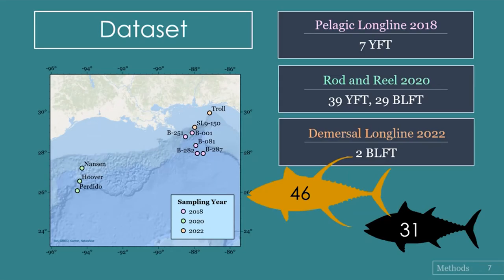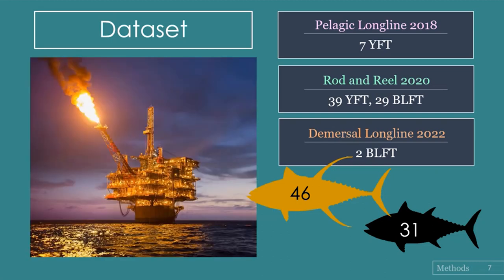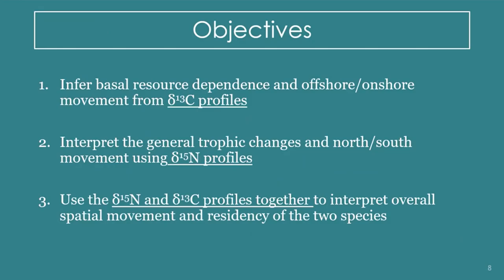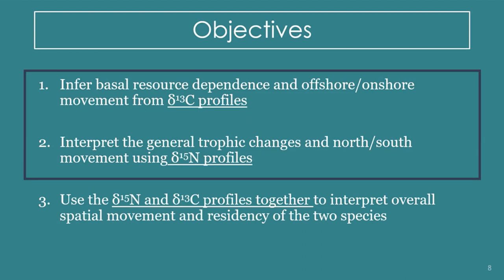All fish for this study were caught in the northern Gulf of Mexico, with the majority caught around oil platforms like this one in 2020. We had 46 yellowfin tuna and 31 blackfin tuna. The three objectives of the study were: to infer basal resource dependence and offshore/onshore movement from delta carbon-13 profiles; to interpret general trophic changes and north/south movement using delta nitrogen profiles; and to use the delta nitrogen and delta carbon profiles together to interpret overall spatial movement and residency of the two species.